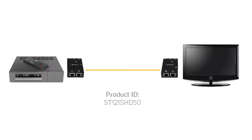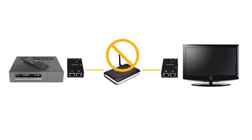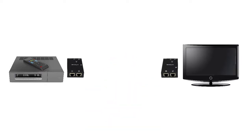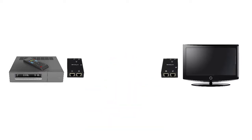When you use a wired point-to-point video extender, the connected cable cannot go through a router or switch. This cable can go through a wall or patch panel, provided at no point it goes through a router or switch. Make sure your wired point-to-point video extenders are directly connected.